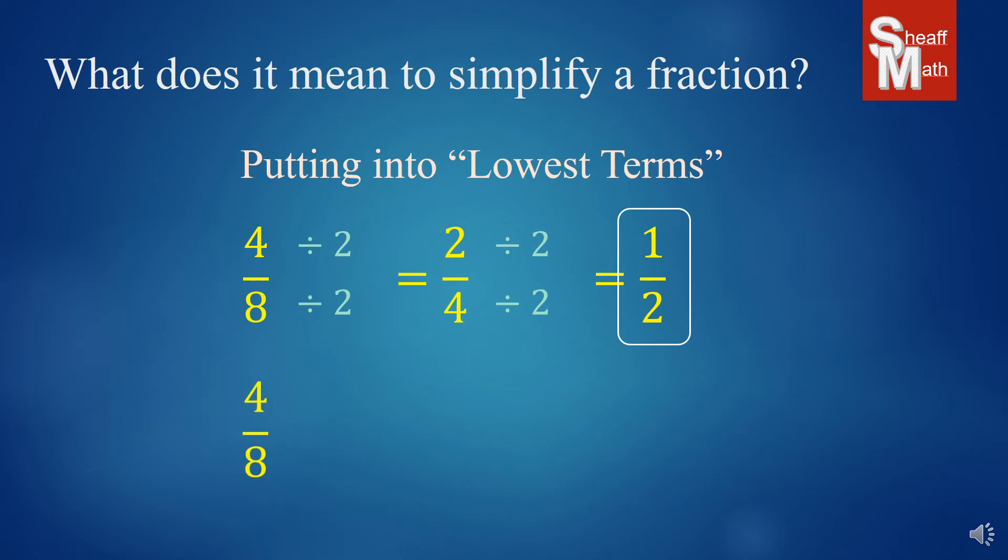Now, could you have done this a little quicker? Well, if you would have recognized or thought about four going into both four and eight, you could have divided by four over four. And so by doing that, we get one half a lot quicker.